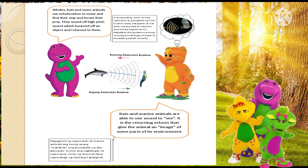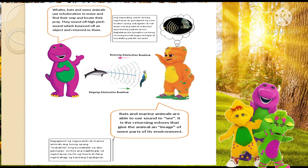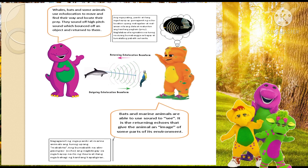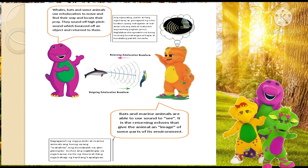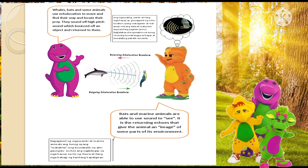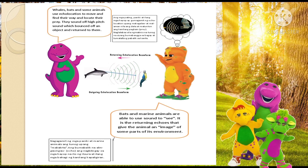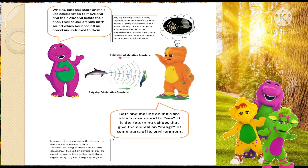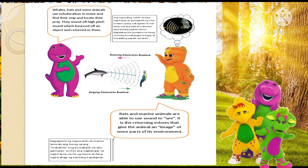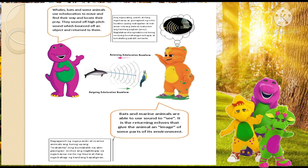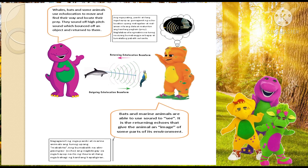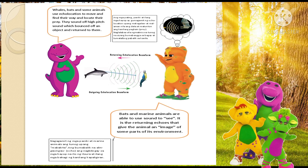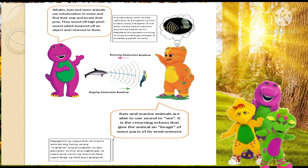Whales, bats, and some animals use echolocation to move, find their way, and locate their prey. They send off high-pitched sounds which bounce off objects and return to them. Bats and marine animals are able to use sound to 'see.' It is the returning echoes that give the animal an image of parts of its environment.